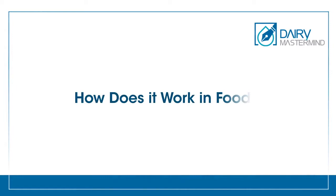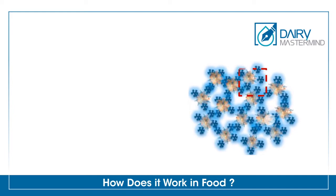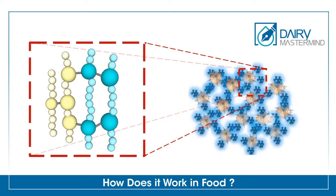How does it work in food? TG can take lysine and glutamine as the best substrate to create crosslinks. By these inter- and intra-links, a three-dimensional network is created. In other words, the protein is polymerized.